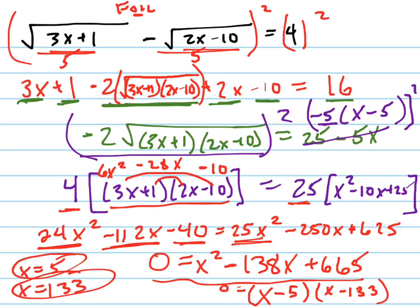133 times 3, I'm checking in my calculator, 133 times 3 equals 399 plus 1 is 400, the square root of 400 is 20, minus 133, again 133, I'm plugging that in for x. 133 times 2 is 266, minus 10 is 256, the square root of 256 is 16, so 20 minus 16 equals 4. They both check out both solutions are in fact solutions to my radical equation.